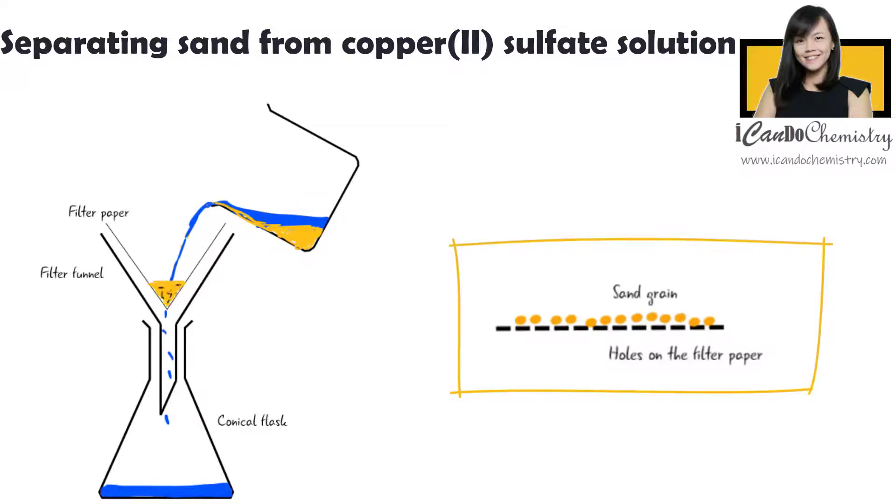The size is so small, only copper-2-sulfate solution can pass through. The sand solid particles that are bigger than the pores of the filter paper will not be able to do so.